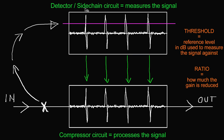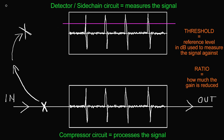Now let's look at the different techniques we can do with the detector sidechain circuit, beginning with what most people call side-chaining. What's happening is we cut that copy of the signal going to the detector sidechain circuit so it no longer reaches it, and instead we bring a completely different external signal into the detector sidechain circuit. So we have a different signal coming into the detector sidechain circuit than the one passing through the actual compressor.